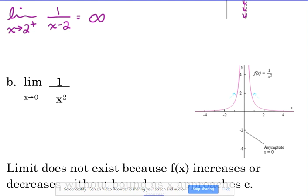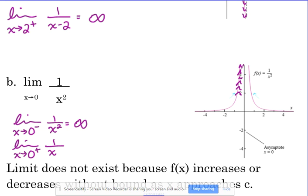Let's look at this one: the limit as x approaches 0 of 1/x². From the left, our y values are going up and up — to positive infinity. From the right, they're doing the same thing. Now, you may say those agree — yes, they do. But the limit is talking about what specific y value we're headed towards. We're not headed towards one specific y value. Infinity is not a specific number — you can always add one to it and get a bigger number. So infinity can't be one specific number.